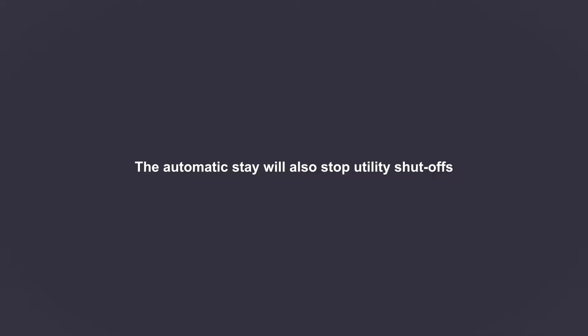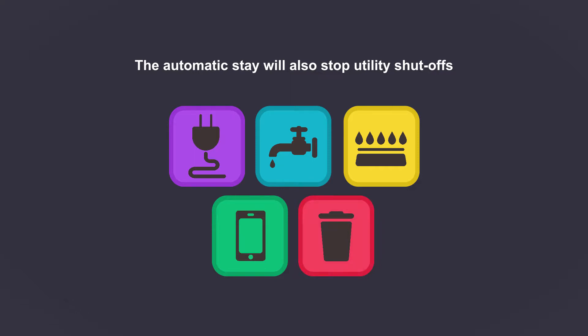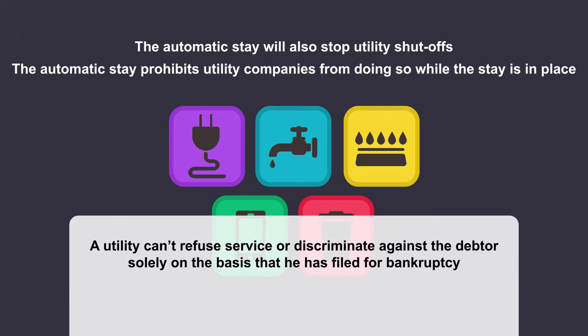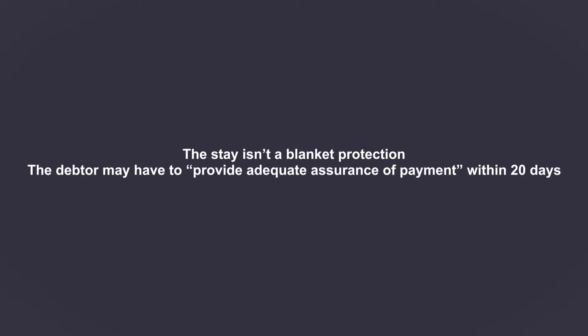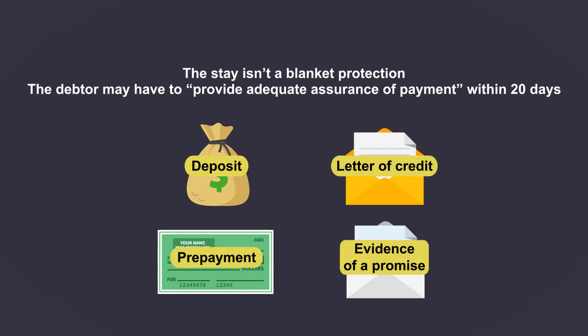The automatic stay will also stop utility shutoffs. If the debtor is behind on an electricity, water, gas, phone, or other utility bill, and is under threat of having the service cut off, the automatic stay prohibits utility companies from doing so while the stay is in place. Furthermore, a utility can't refuse service or discriminate against the debtor solely on the basis that he has filed for bankruptcy. The stay isn't a blanket protection — a debtor may have to provide adequate assurance of payment within 20 days to prevent the utility company from shutting off service. An adequate assurance of payment can be a deposit, letter of credit, prepayment, or any evidence of a promise that the debtor will make regular payments to the utility providers.